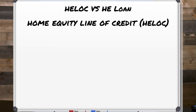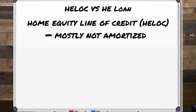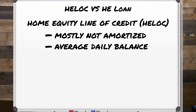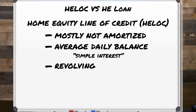Now let's go to the home equity line of credit side. The main thing about a HELOC is that it's not amortized — although it can be, but the way we're going to show you how to use a HELOC it won't be amortized. A HELOC uses what's called the average daily balance — a lot of people like to use the term simple interest. The way interest is calculated on a HELOC is a bit different than a home equity loan because your balance on the home equity line of credit can change pretty much on a daily basis.